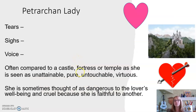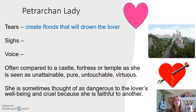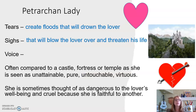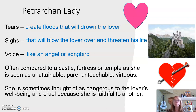The Petrarchan lady also had some qualities that could be damaging to the Petrarchan lover: her tears create floods that will drown the lover, her sighs will blow the lover over and threaten his life, and she has a voice like an angel or a songbird. She is often compared to a castle, a fortress, or a temple, as she is seen as unattainable, pure, untouchable, virtuous. Just think about the sexual symbolism — she's a fortress, unable to be scaled or entered.